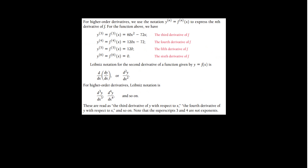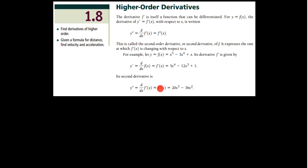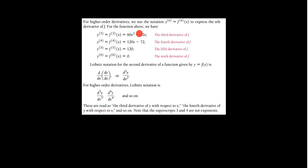For higher order derivatives, we use the notation y⁽ⁿ⁾ or f⁽ⁿ⁾ to express the nth derivative. We stop with the prime notation after the second derivative, because the prime symbol gets a little out of control. For example, the third derivative would be 60x² − 72x, and then the fourth derivative is taking the derivative of that, the fifth derivative of that, and the sixth derivative goes to zero because the derivative of a constant is zero.